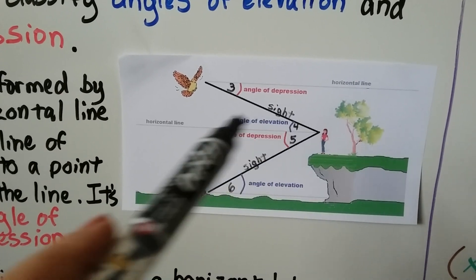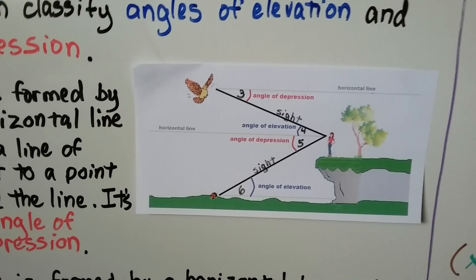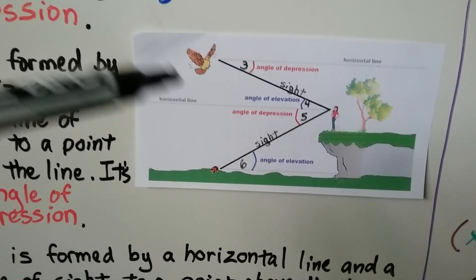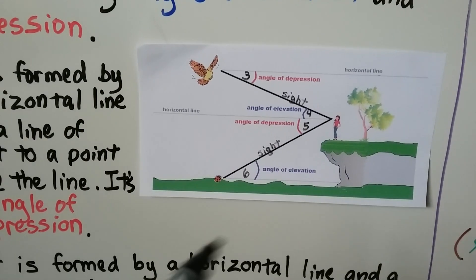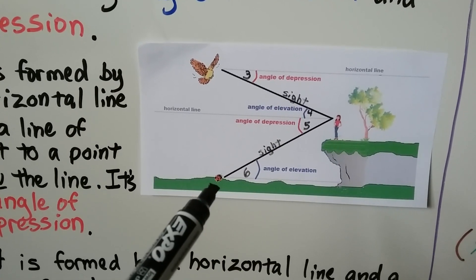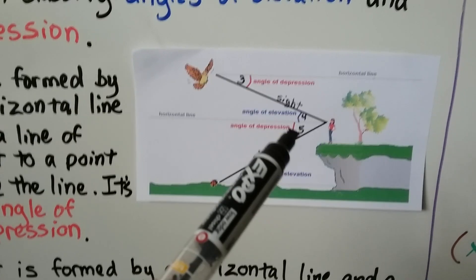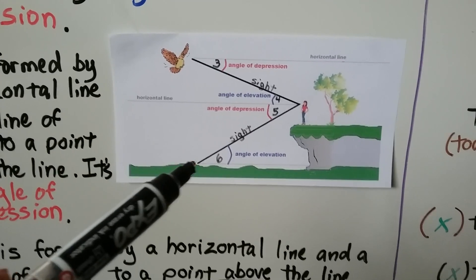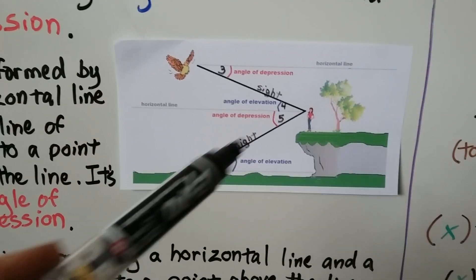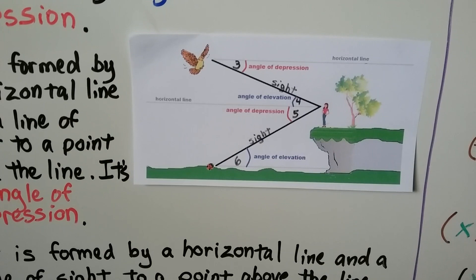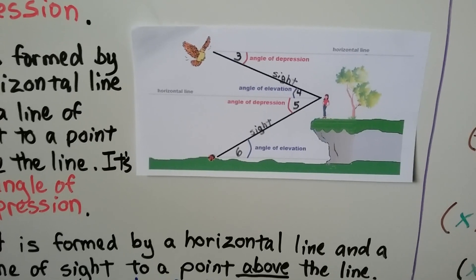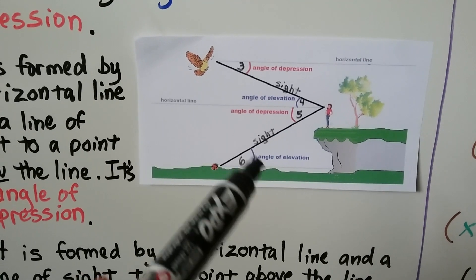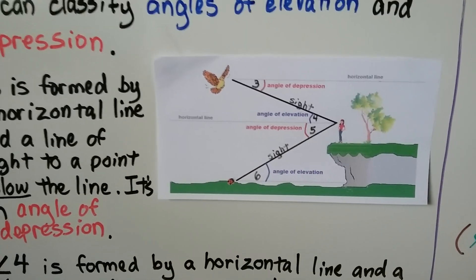Angle 4 is above the horizontal line. Angle 5 is formed by the horizontal line and a line of sight to a point below the line — for her to look down at the ladybug — so angle 5 is an angle of depression. Angle 6 is for the ladybug to look up at the woman, formed by a horizontal line and a line of sight to a point above the line, so that's an angle of elevation.